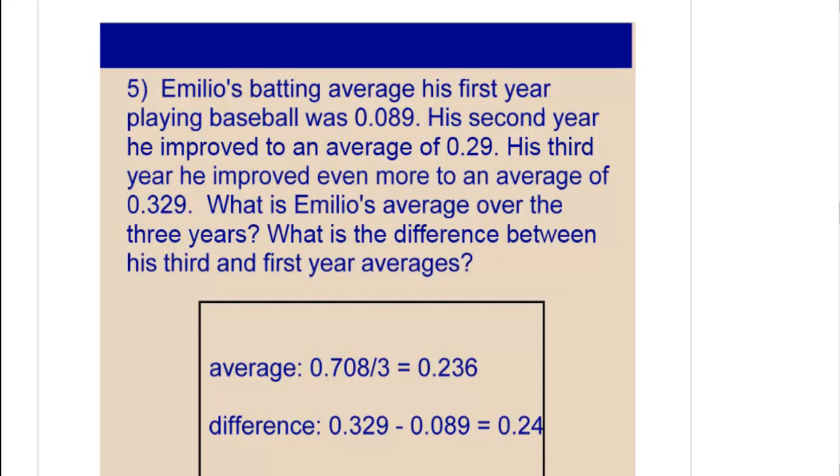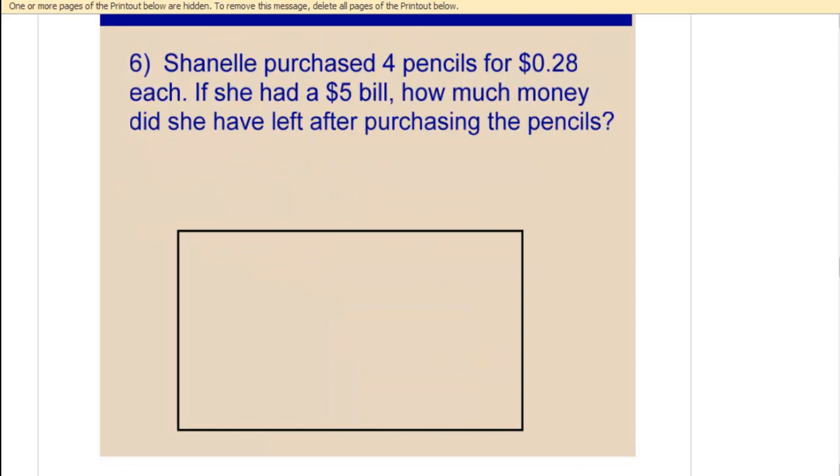The difference, you have to take the best number, which is his last year, and then subtract the very first year to see his improvement from the beginning to the end and you get 24 hundredths. Try number six and check back to see how you did.